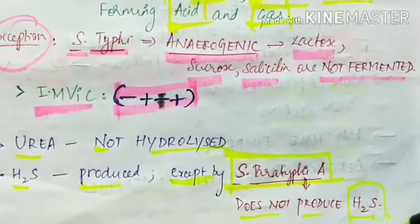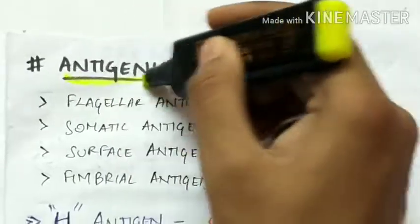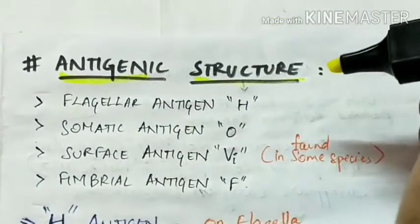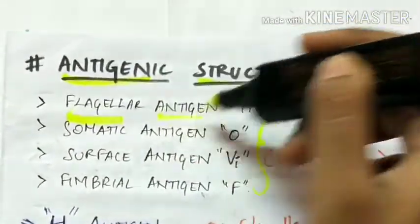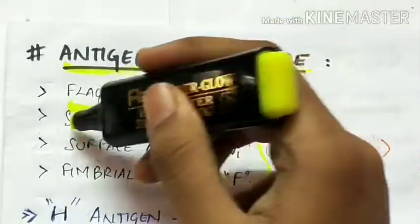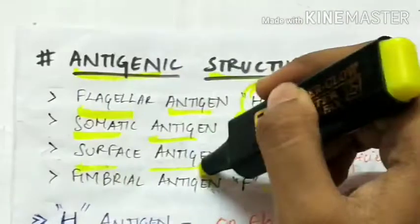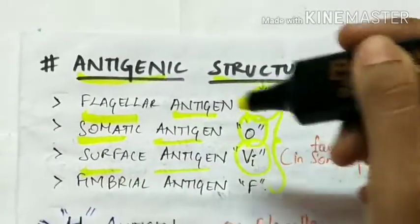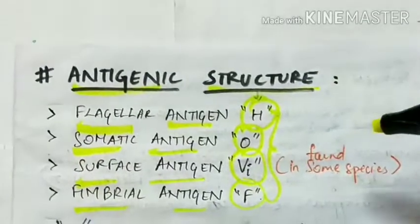Antigenic structure: The four main antigenic structures seen in Salmonella are the flagellar antigen, that is H antigen; somatic antigen, O antigen; surface antigen, Vi antigen; and fimbrial antigen, F antigen. The surface antigen is found only in some species. Let's see all the four one by one.